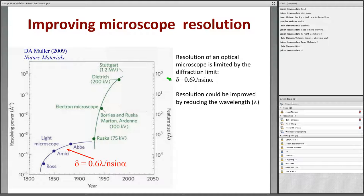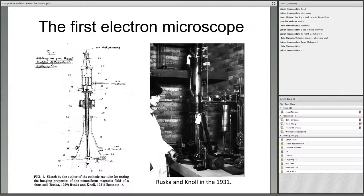A way to increase the resolution would be to decrease this value of lambda. That can be done with electrons because we can accelerate the electrons at high voltage and they have a short wavelength. This was done by Ruska and Knol in 1931, and this is an image of the first electron microscope.